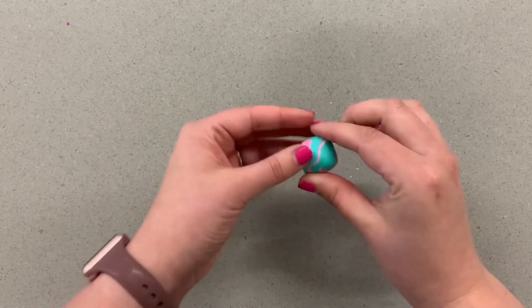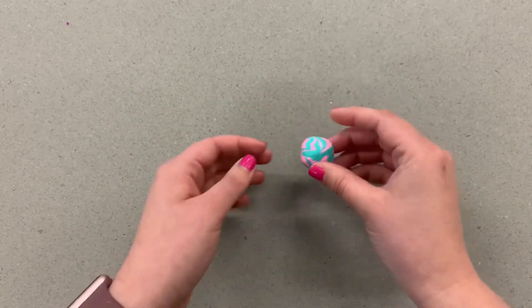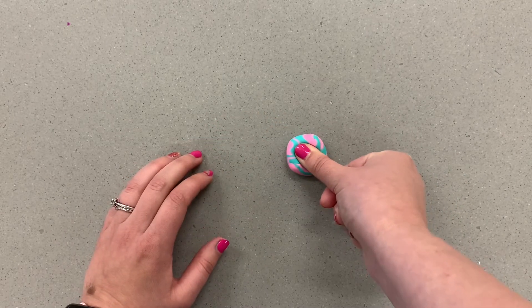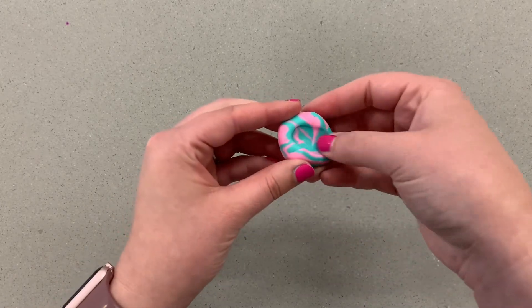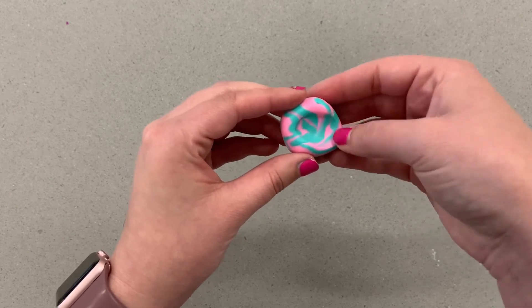Once you've got it the shape you want, find a good spot that you want to be the top and you're going to push your thumb into it straight down. You don't need to push all the way down because then you flatten it out too much. Then take a minute to smooth out your fingerprints inside there, and then we will bake these in the oven.